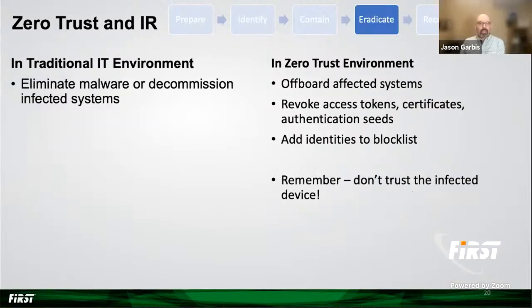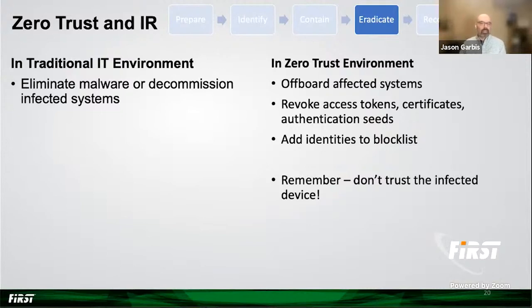In terms of eradication, zero trust can certainly help by off-boarding any affected systems. You can decommission them, revoke certificates and access, and even completely remove identities' ability to access resources. This is a simple step in terms of off-boarding the system, though zero trust doesn't directly help with things like cleaning up malware from a file system or restoring from backups — although it can help in those workflows. And as always, remember: don't trust the infected device.